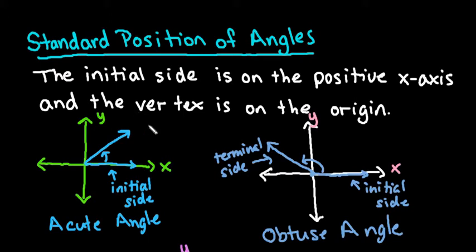A couple things you need to know: the initial side is always the starting side, the vertex is where the two rays that form the angle meet. The initial side of a standard position of angles is on the positive x-axis, and the vertex always falls on the origin at point (0,0).